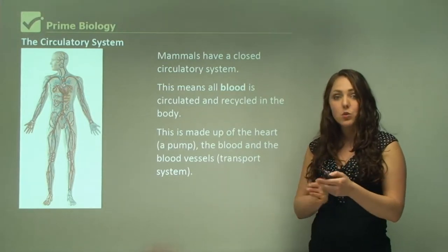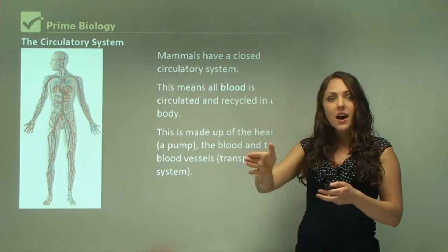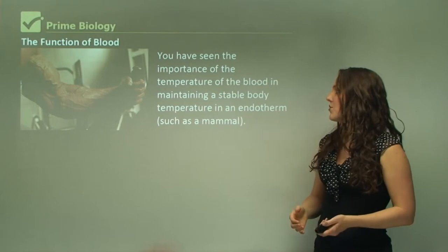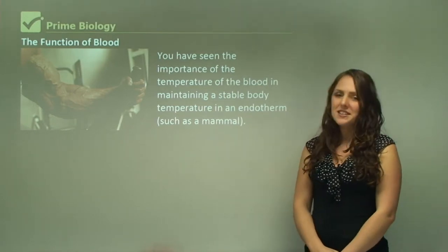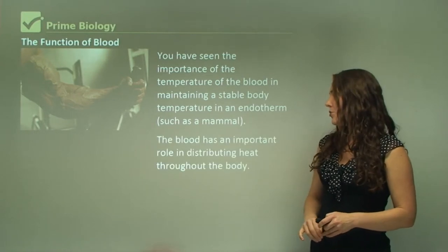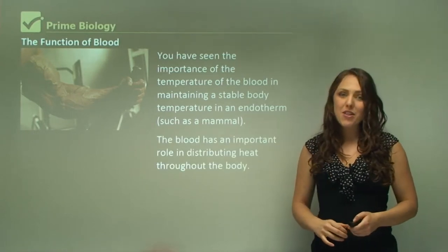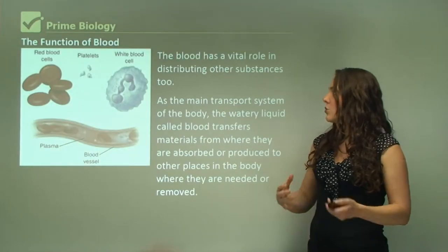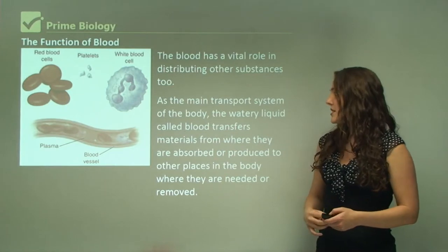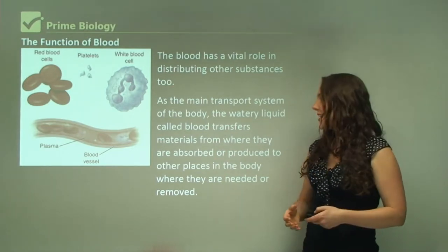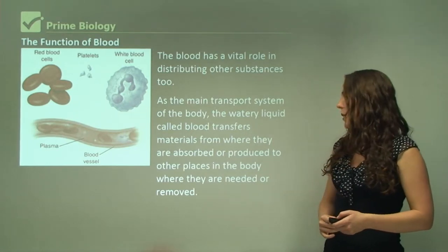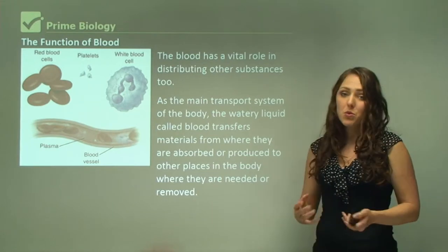Your blood vessels are like roads and the blood is like the car that gets you somewhere. Blood plays an important role in maintaining a stable body temperature in endotherms such as mammals by distributing heat throughout the body. As the main transport system of the body, the watery liquid called blood transfers material from where they are absorbed or produced to other places in the body, or from where they need to be removed.